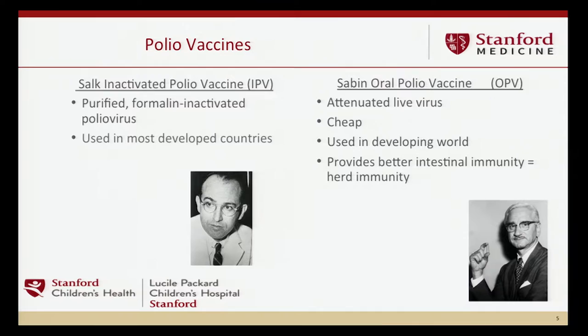It appears not to produce humoral gut immunity, and we and others are doing studies to try to identify that. There may be some degree of gut immunity, and that's a big question we may have time for at the end. The second is the Sabin oral polio vaccine—an attenuated live virus. It's very inexpensive, pennies per dose, given orally so you don't need to worry about administration issues. Used primarily in the developing world, it produces immunity very similar to natural infection and also provides herd immunity through secondary spread.